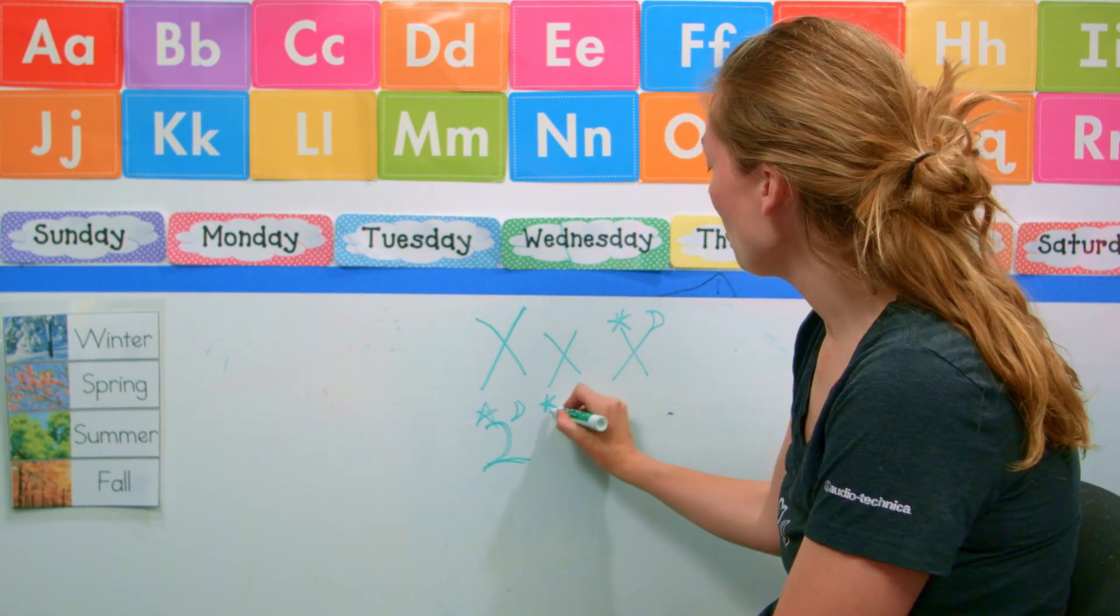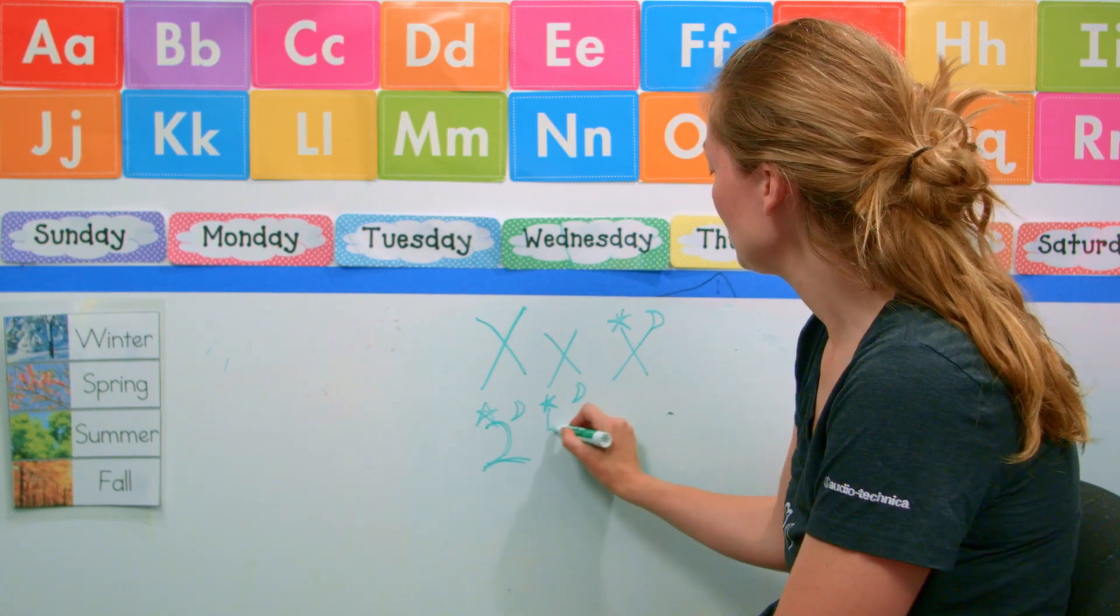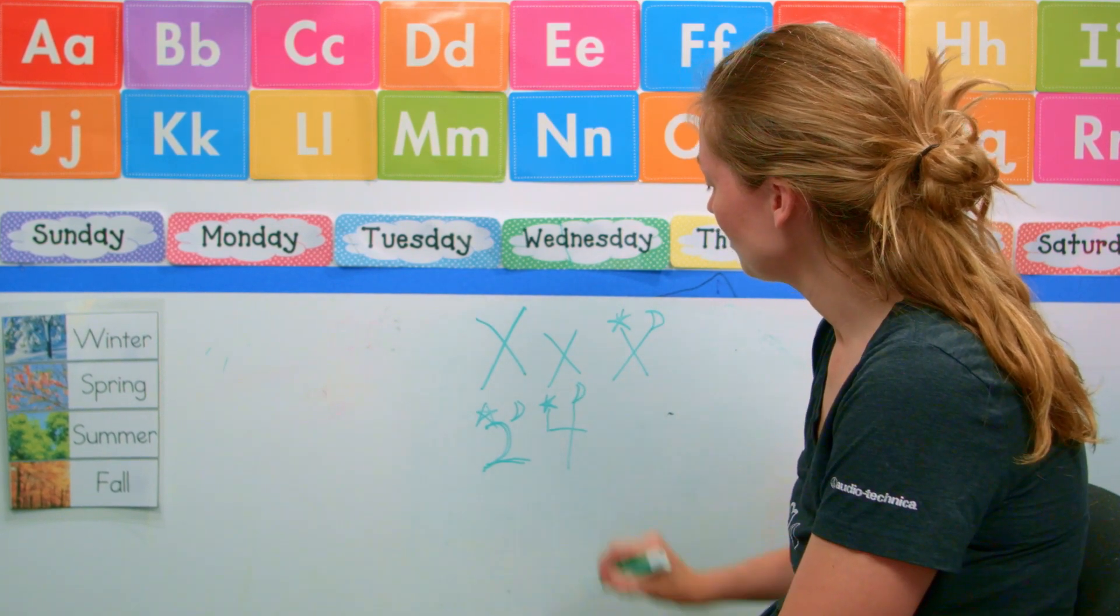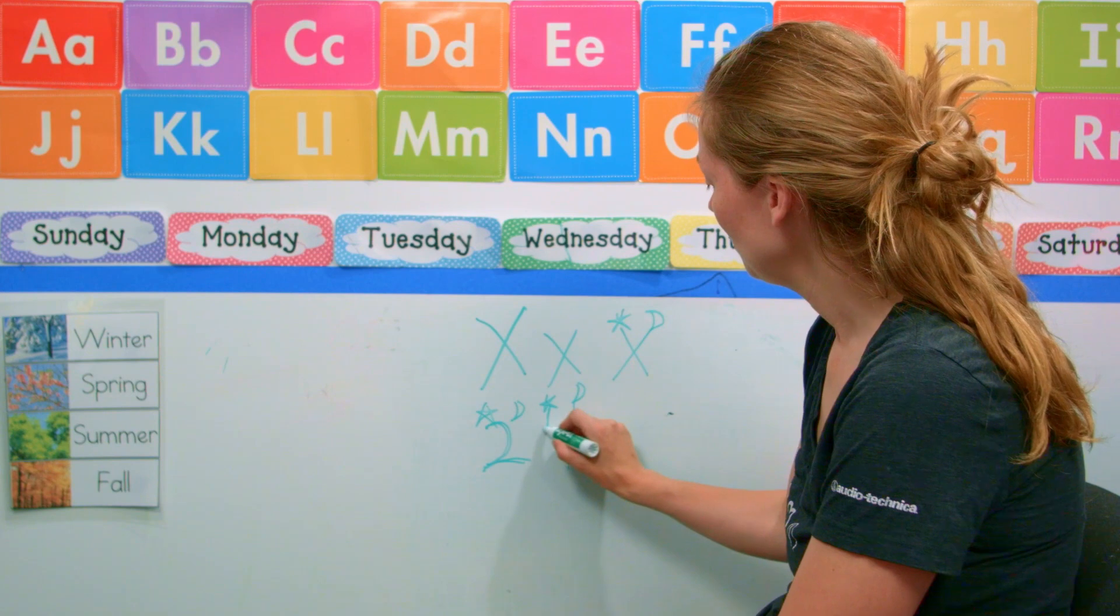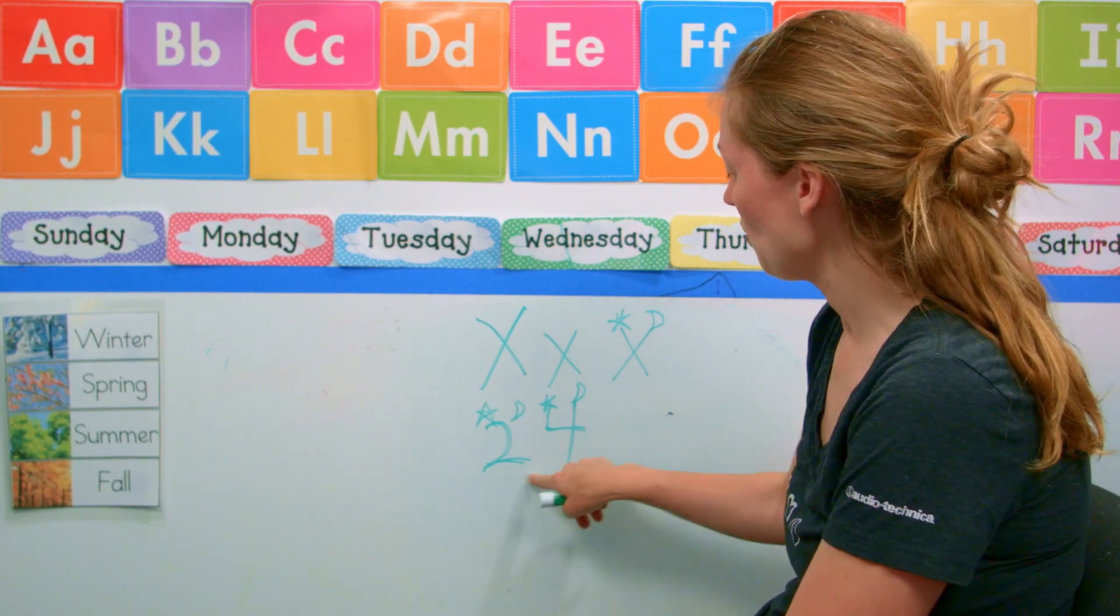And then for my four, I start at the star. We go down the ladder, little road, and then I go to my moon and we do a big down the ladder. So down the ladder, little road, and big down the ladder. Twenty-four.